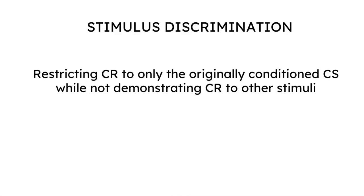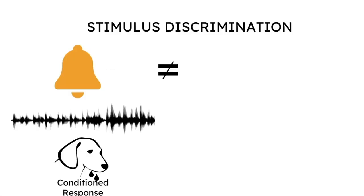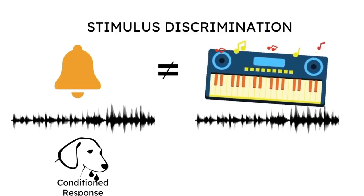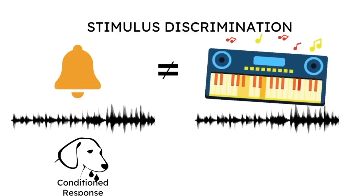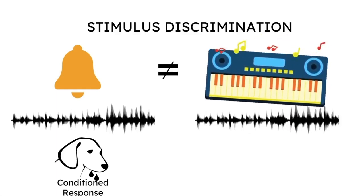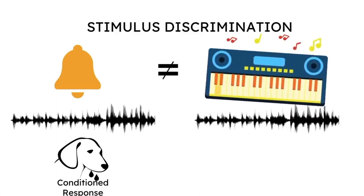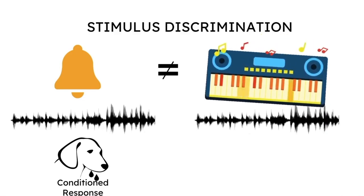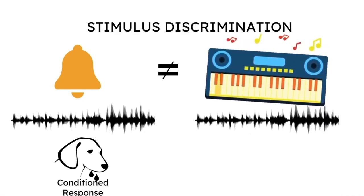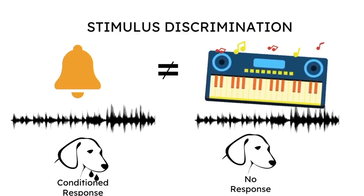Let's look at an example. The sound of the bell to which the dog is conditioned might not match the sound of a piano or a Casio. In such a situation, the animal can discriminate between the stimuli and selectively elicit the conditioned response only to the sound of the bell, but not to the sound of the piano.